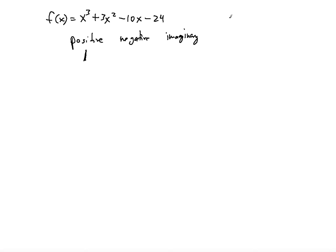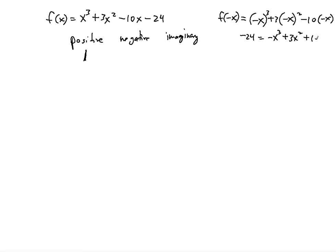To find the number of negative zeros, we first have to plug negative x into the function. So we're going to have negative x to the third power plus 3 times negative x squared minus 10 times negative x minus 24. That gives us negative x to the third plus 3x squared plus 10x minus 24. Now we can inspect the number of sign changes to determine how many possible negative zeros there could be. There's one change from negative to positive, and then a second change from positive to negative. So two negative zeros can theoretically exist.